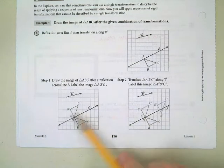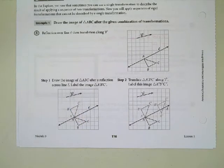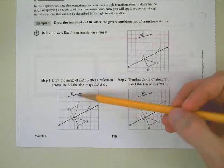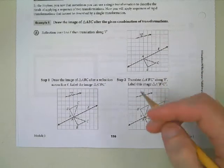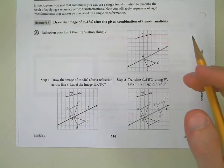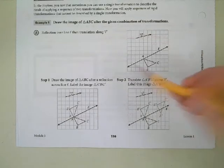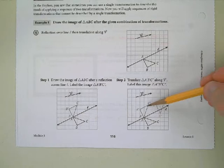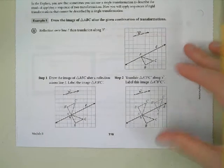And then once you have those, we're going to translate using the vector. Lindsay, this vector, what is this vector telling us to do? Which direction specifically are we supposed to go? Right. How much? Four. And then, is that it? Right, for up one. And you can see over here, they've done that for us. From C prime to C prime prime, they went right one, two, three, four, and up one. Or I could do up one, and then right one, two, three, four. Still the same point.